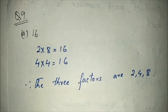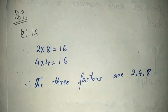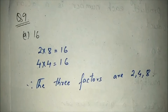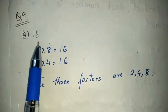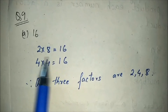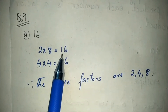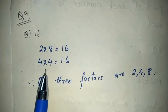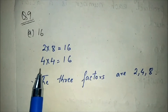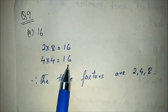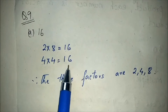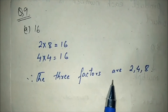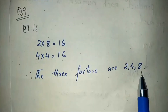Now see question number 9: Write 3 factors of the following numbers other than 1 and the number itself. So we cannot write 1 and the number itself. Let us solve part A: 16. Think of numbers which when multiplied give the product 16. 2×8=16. Is there any number which when multiplied with 3 gives 16? No. The next number is 4: 4×4=16. Since we are asked to find only three factors, we write 2, 4, and 8. So the three factors of 16 are 2, 4, and 8.